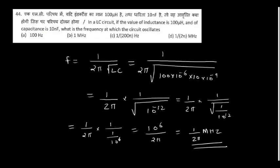Question number 44: In an LC circuit, if the inductance is 100 microhenry and the capacitance is 30 nanofarad, what is the frequency at which the circuit oscillates? Apply the formula f = 1 / (2π√LC) and simplify it. The answer is 1/(2π) megahertz — option D is the answer.